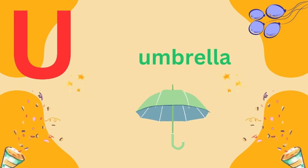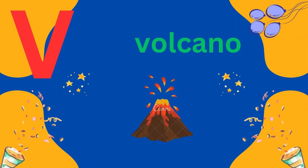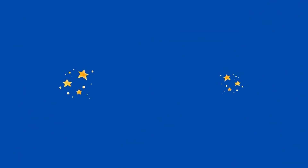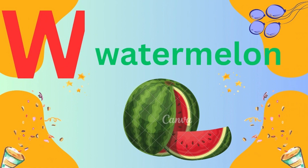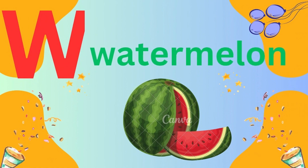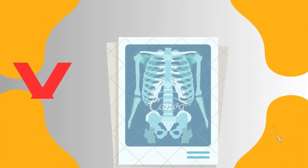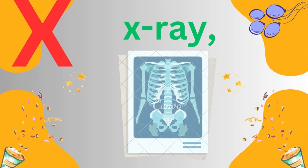U is for umbrella. V is for volcano. W is for watermelon. X is for X, R.